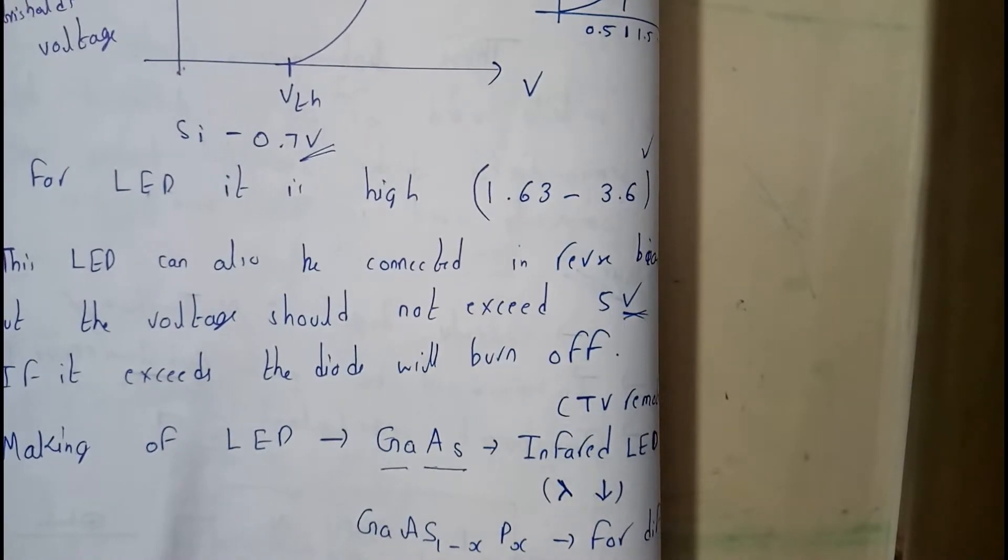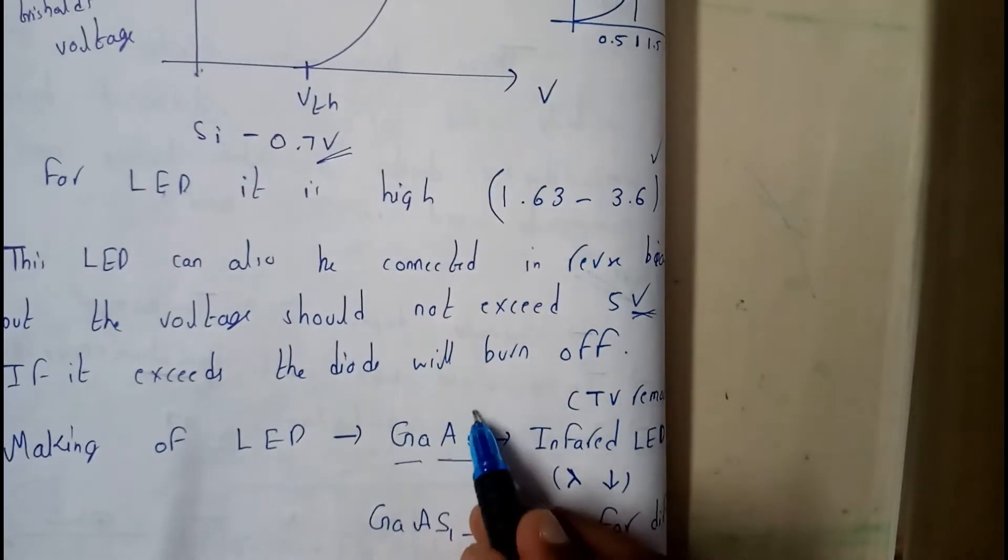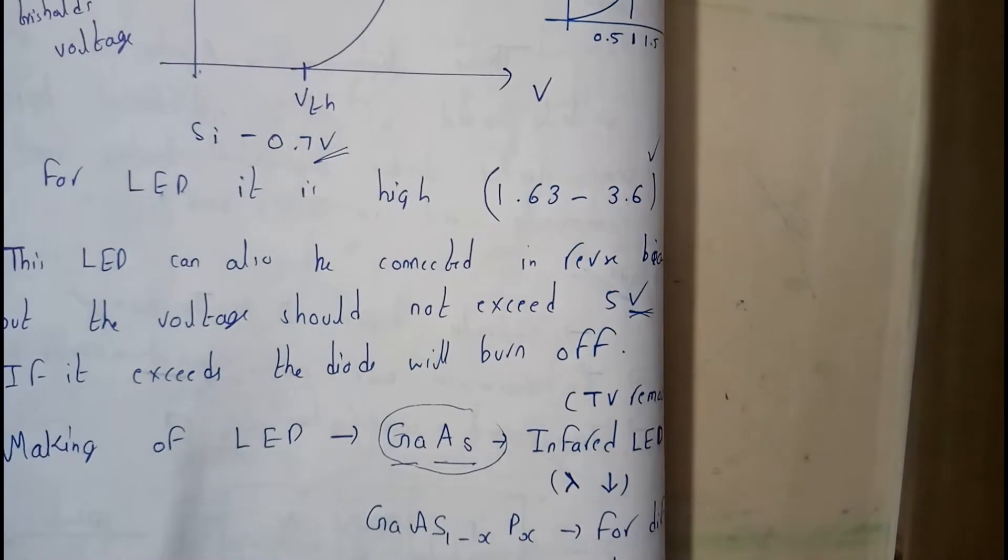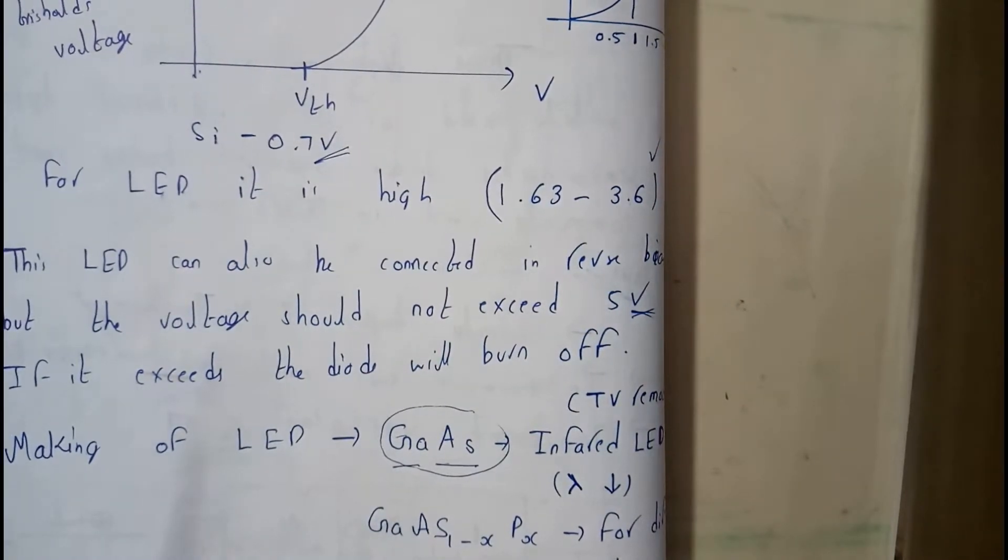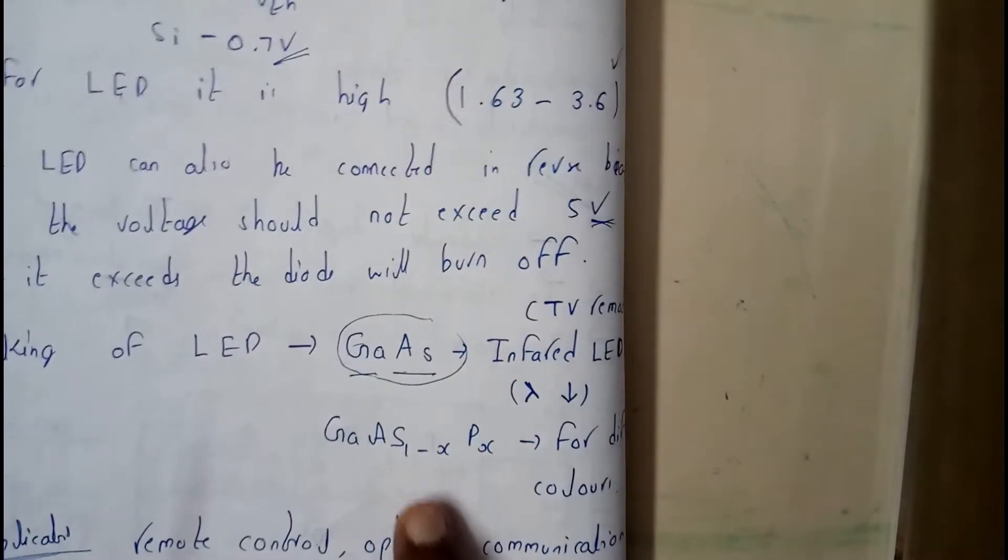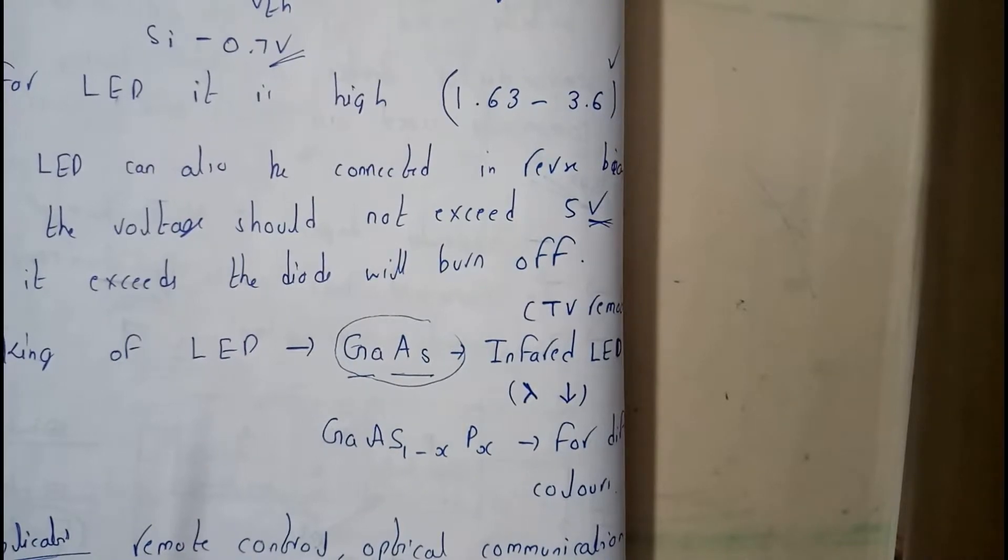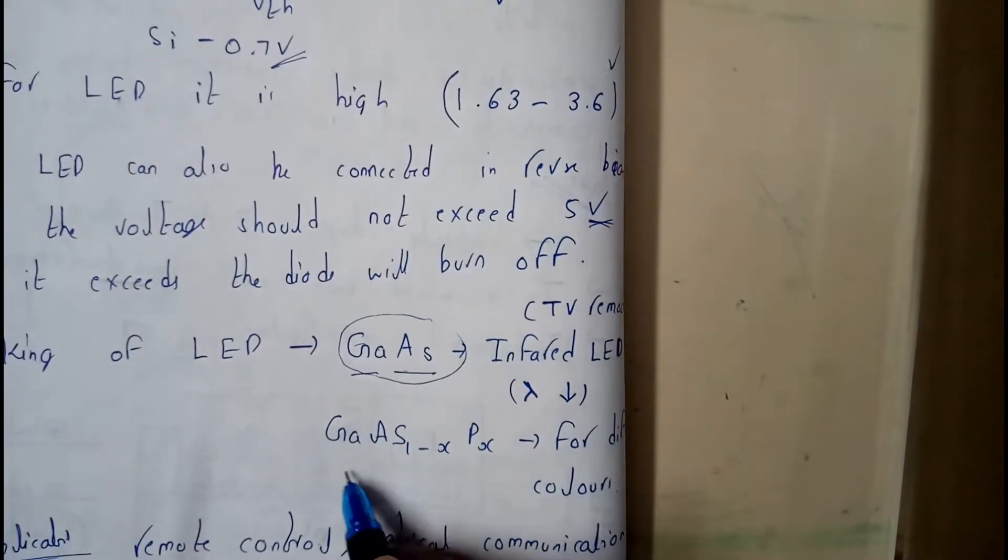Basically the TV remote when you click the button there will be a red light, but it blinks and it's off within minutes or seconds. That light is made up of this thing - that's an infrared or infra LED.